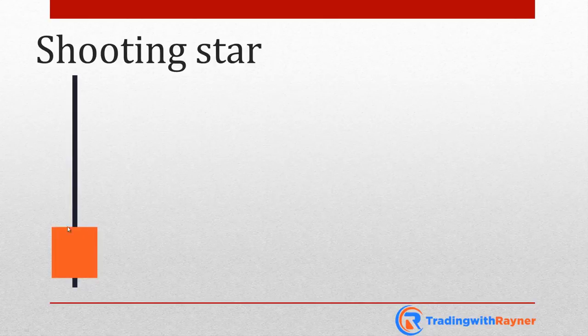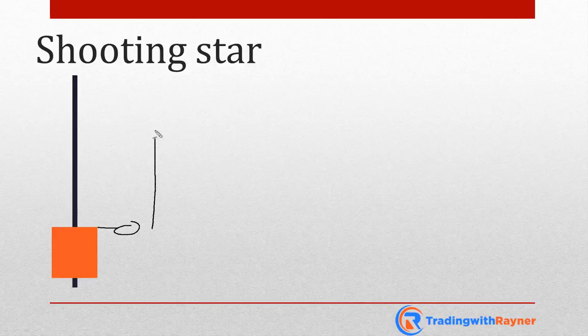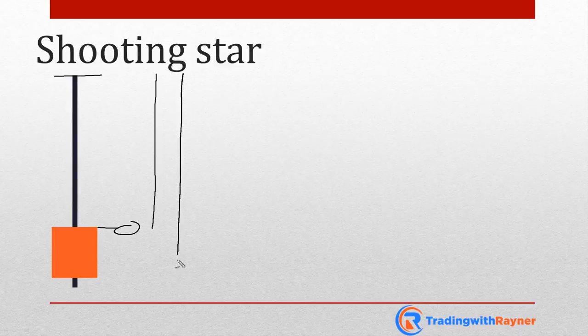In this video, I'll be discussing about the shooting star. The shooting star looks something like this — it's basically the opposite of a hammer. This is where the price opened, and you can see that the buyers came in and pushed price all the way up higher. This is the absolute high for this particular period, and then the sellers came in, reversed all the gains made by the buyers, and eventually closing near the lows.